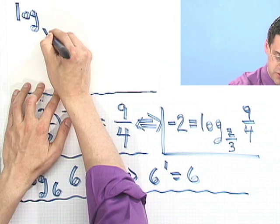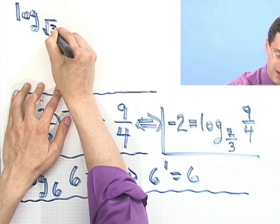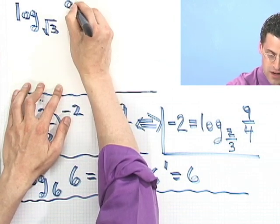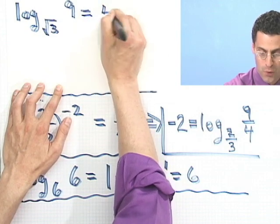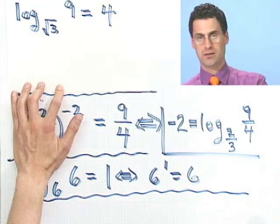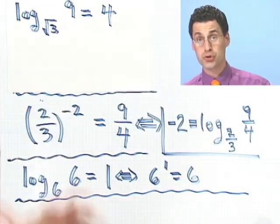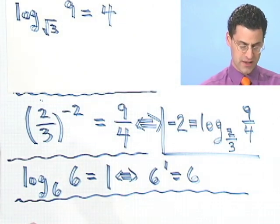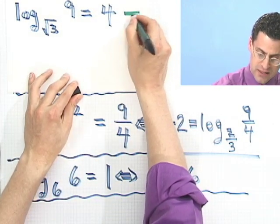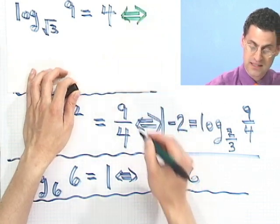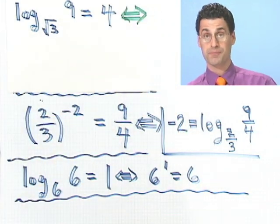Log base square root of 3 of 9 equals 4. Now that looks really weird. And in fact, maybe that's not even true. But I want you to convert this into the equivalent exponential fact and see if this is really true or not. Maybe it's not even a true statement. Give it a shot right now. Be careful and work through it.